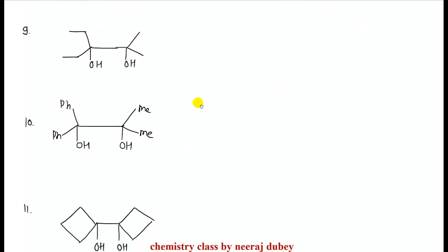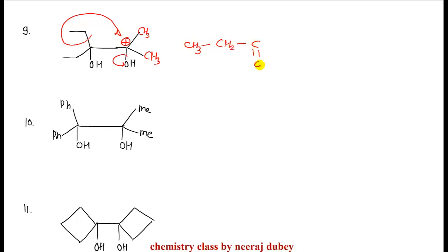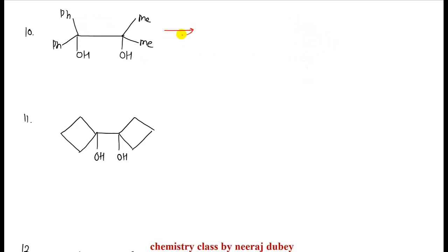The more stable carbocation forms on the right side because if carbocation forms here, alpha hydrogens will be more — more hyperconjugation stabilization. When positive charge comes here, now both groups will be tested for migration. In the next example, carbocation will be more stable on the left side, so carbocation forms there.